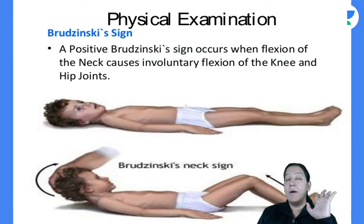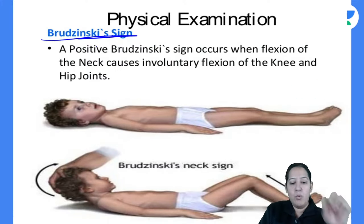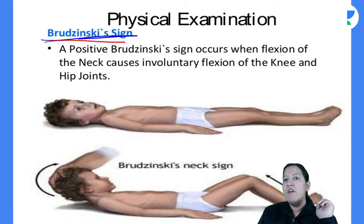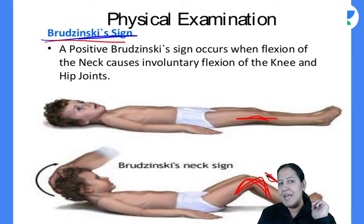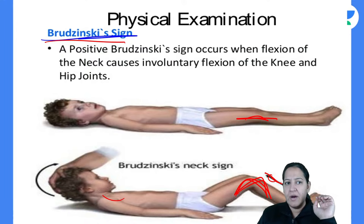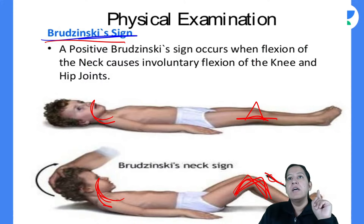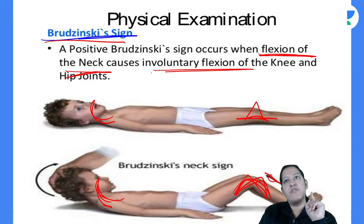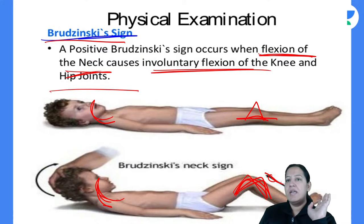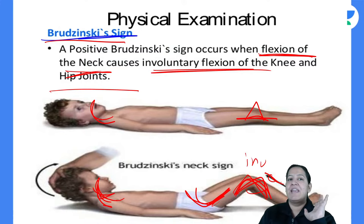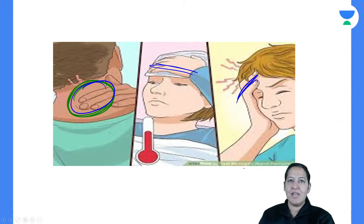Brudzinski's sign is a clinical test for meningitis: when you flex the patient's neck, it causes involuntary flexion of both the knees and the hip joint. This is positive Brudzinski's sign. For diagnosis, CSF examination is required — there is no blood test that confirms meningitis.